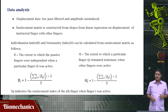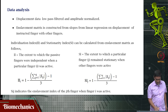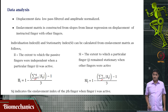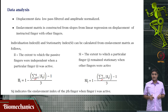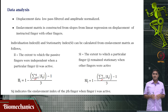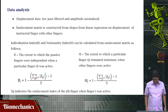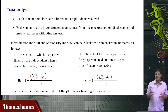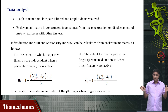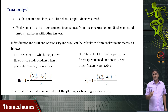Also note the difference between the formulae for individuation index and stationarity index. The summation is over J in the formula for individuation index, and over I in the formula for stationarity index. Which finger is active? That is the i-th finger. What are all the passive fingers? Those are the J fingers. The enslavement index of the j-th finger when the i-th finger is active is S_ij. In which dimension you sum determines whether you are talking about individuation or stationarity — a tiny notational difference but a huge computational difference. Please be very cautious in understanding and interpreting this.